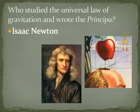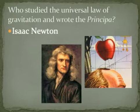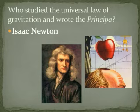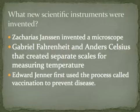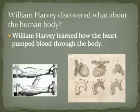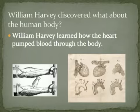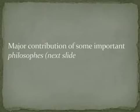Isaac Newton studied the universal law of gravitation and wrote Principia — the famous story involves an apple falling on his head. He described the laws of motion, such as an object in motion staying in motion unless acted on by an outside force, and calculated the specific formula for gravity. New scientific instruments included Janssen's microscope, Fahrenheit and Celsius's temperature scales, Edward Jenner's vaccinations, improvements to the telescope, and the barometer. William Harvey discovered how the heart pumps blood through the entire body.